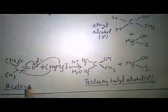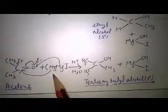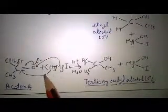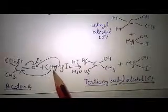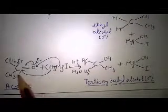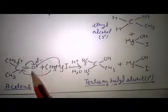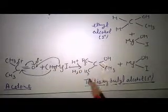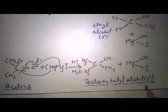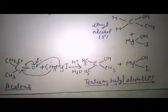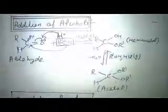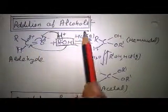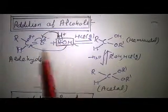A similar reaction takes place with acetone. When the Grignard reagent reacts, CH₃ attaches with the carbon and MgI attaches with the oxygen. When this reacts with H+ ions, we get tertiary butyl alcohol, and the addition product MgOHI is released.